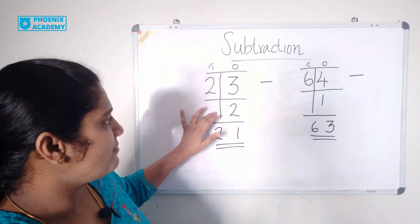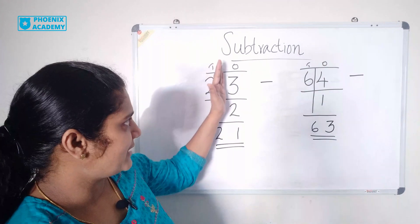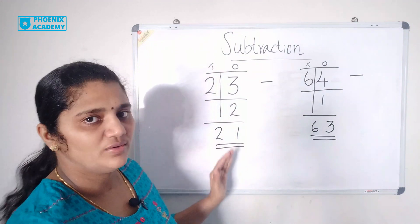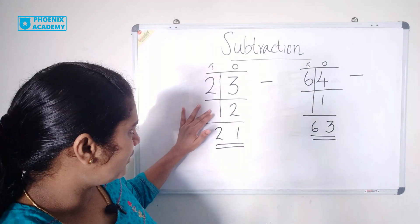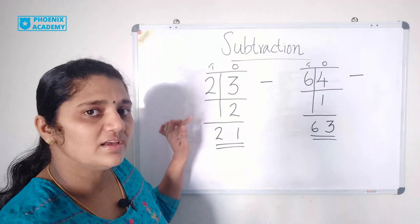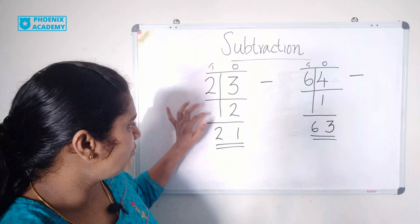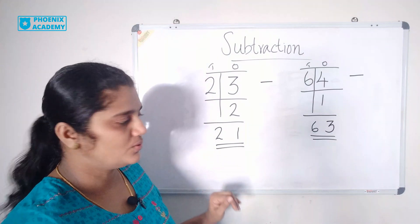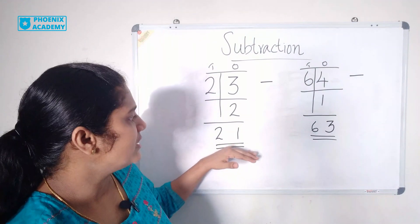2 minus 2. So 2 minus 2 is 1. We don't have any values in tens place. We consider this value as 0. So 2 minus 0 is 2. Then the answer is 21.